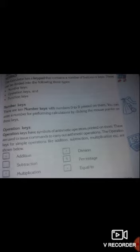The keys can be divided into three types: number 1, number keys; number 2, operation keys; number 3, function keys. There are 10 number keys with numbers 0 to 9 printed on them. You can enter a number for performing calculation by clicking the mouse pointer on these keys.